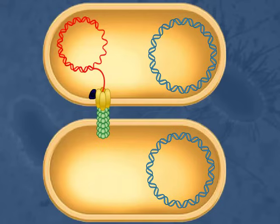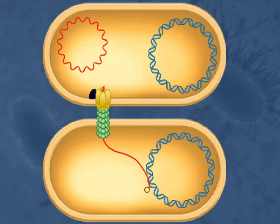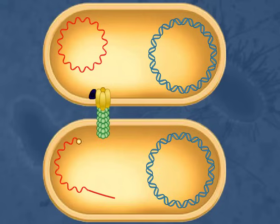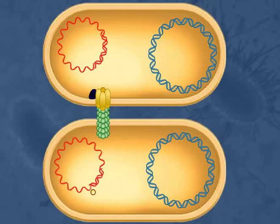The exporter pumps the T-DNA relaxase complex into the recipient cell. Once the entire T-DNA molecule is transferred to the recipient cell, relaxase joins the ends to make a circular DNA molecule. As the T-DNA is transferred to the recipient cell, it is replicated to become double-stranded.